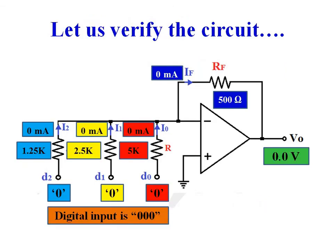Now let us verify the circuit by applying some input combinations. When digital input is 000, all three SPDT switches are connected to ground. So current flow through all three resistors in the binary-weighted resistor network is zero: I0 equals 0, I1 equals 0, I2 equals 0. Therefore feedback current IF equals I0 plus I1 plus I2, which equals 0mA.